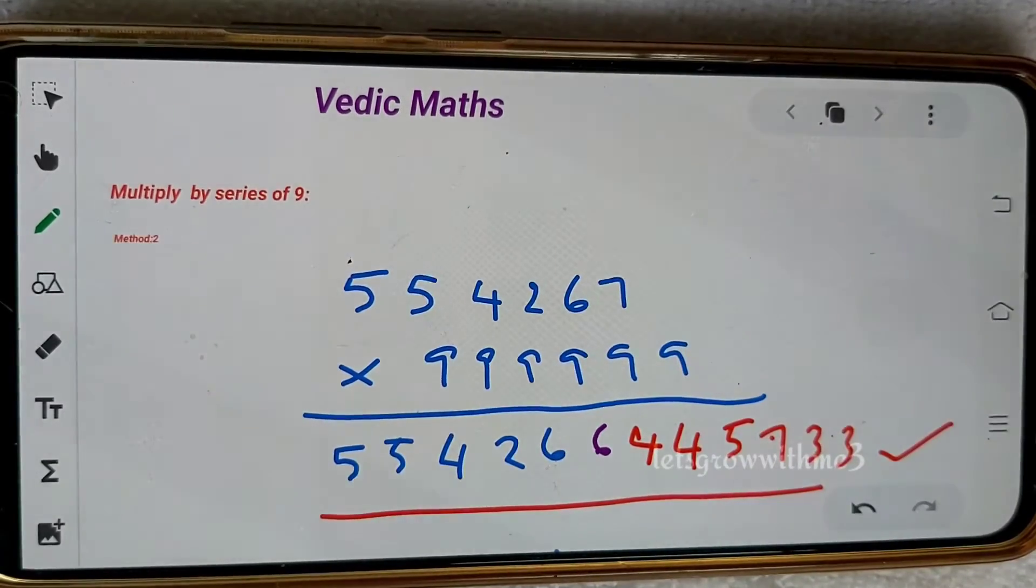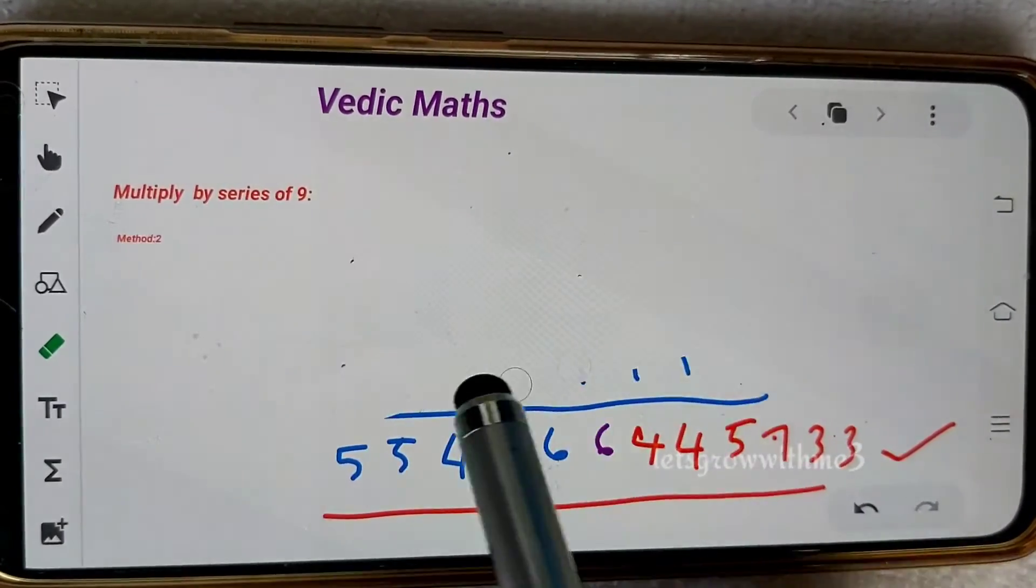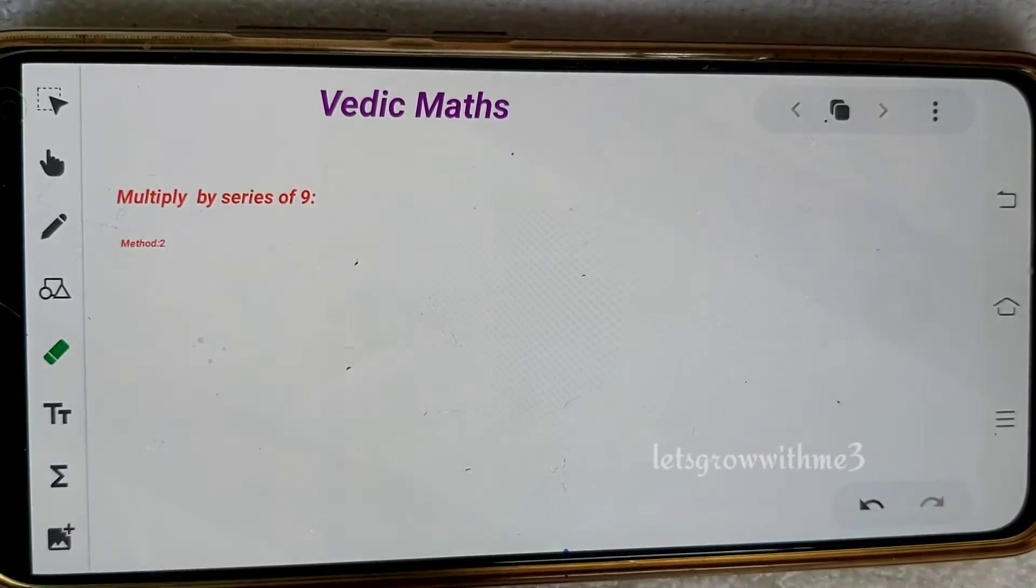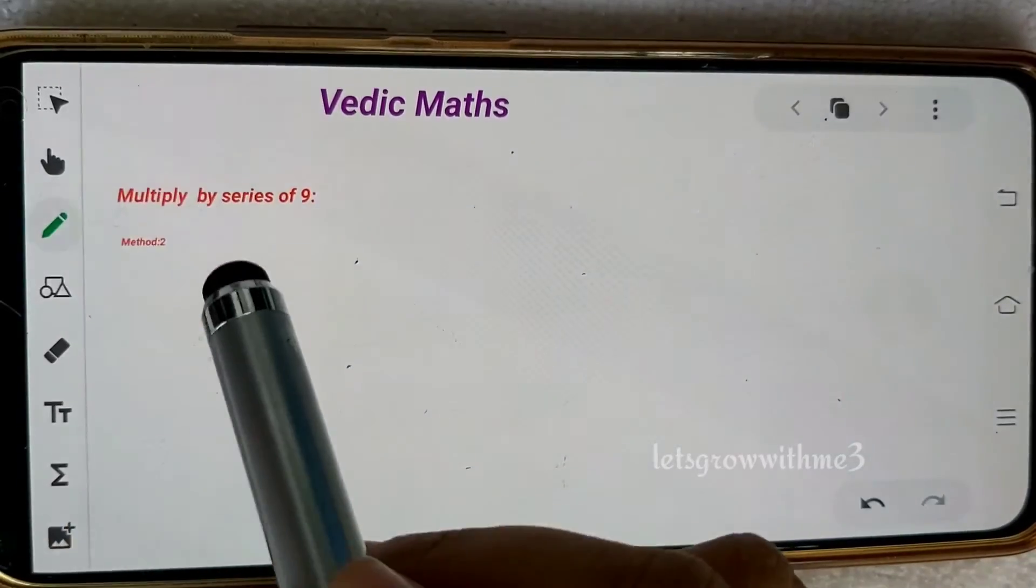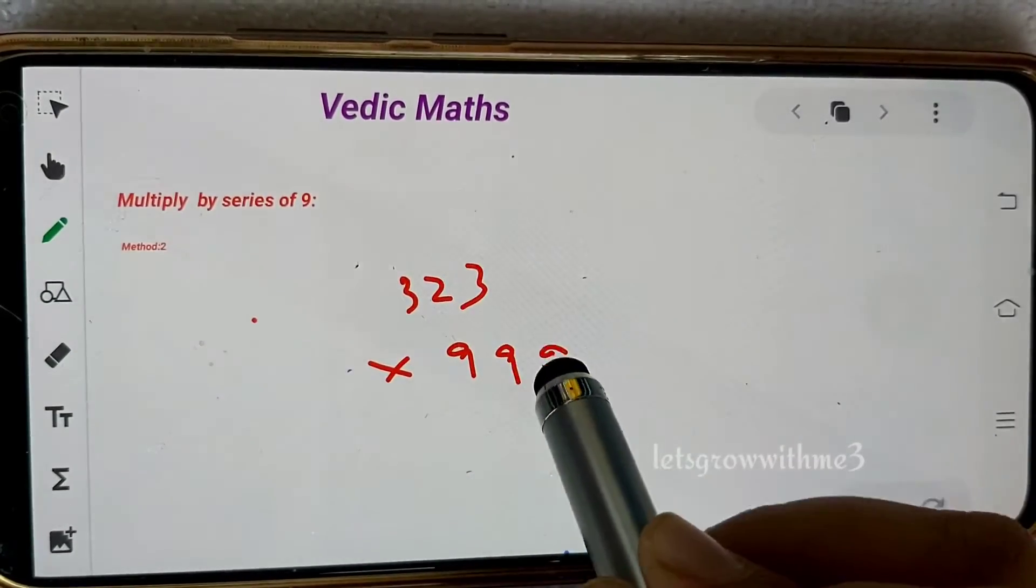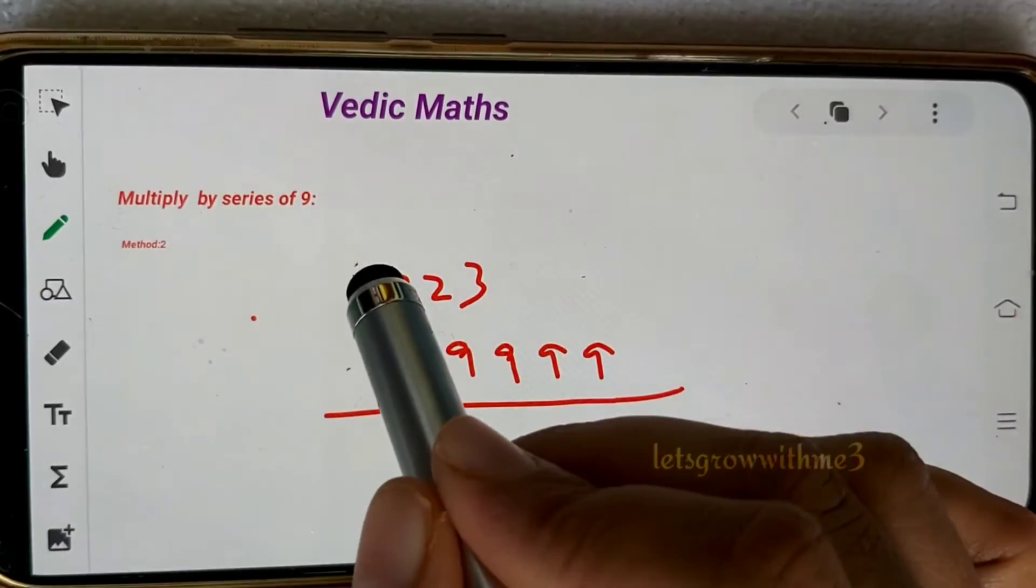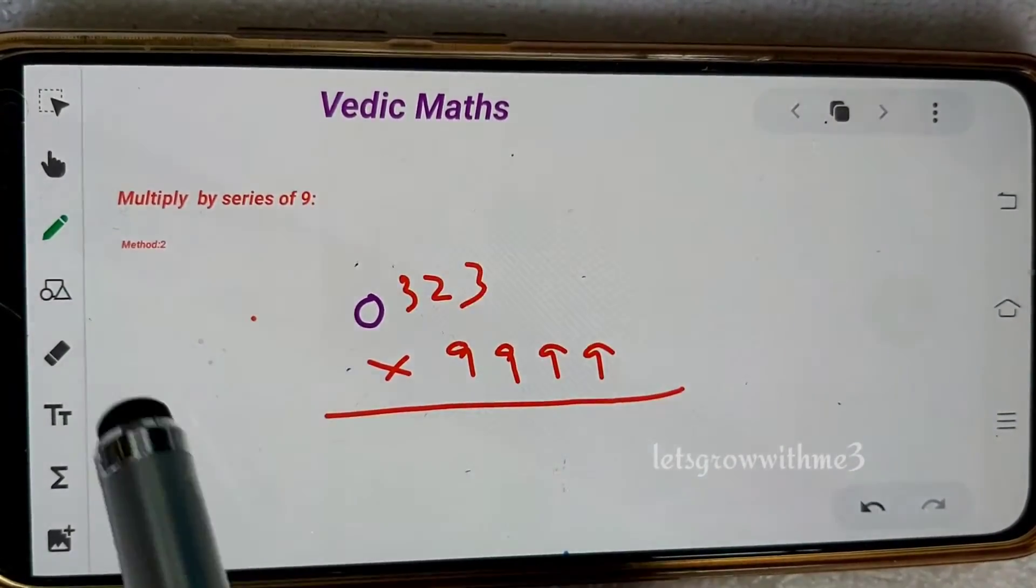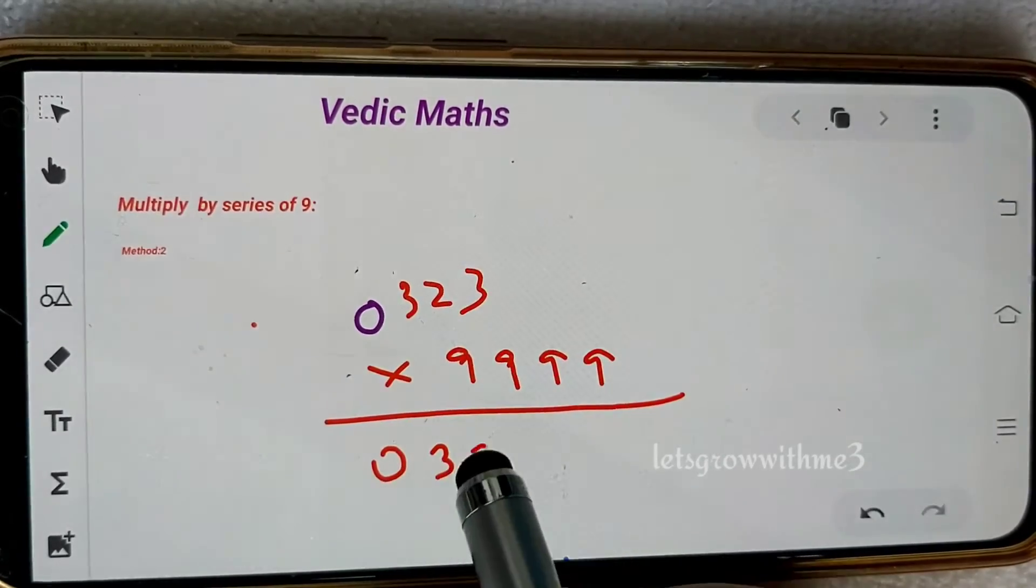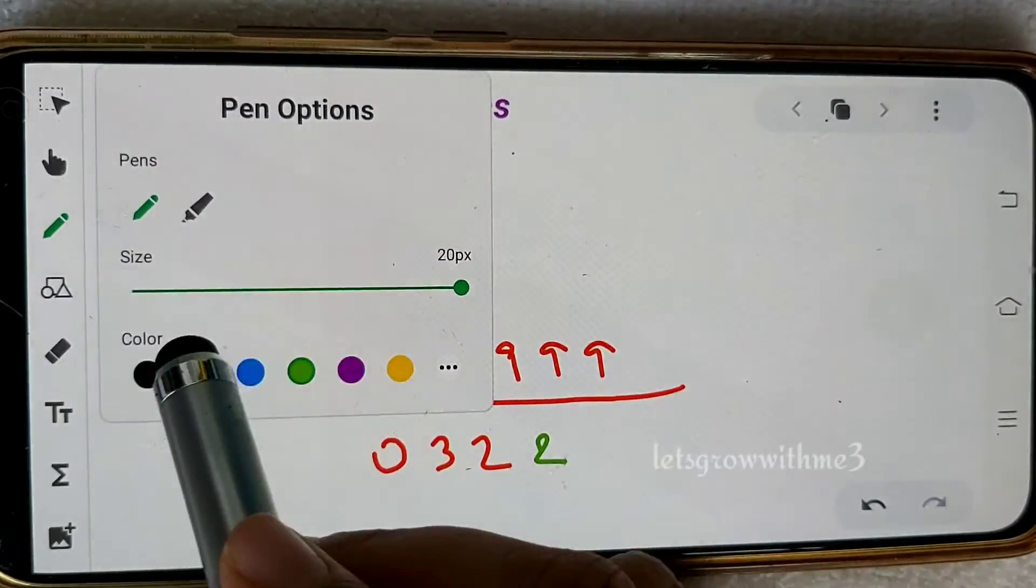Let's do our next question. Now I'm taking a different kind of problem. 323 times 99. If we have different digits, how to do? Can we apply this method? Yes, of course. Just we need to append the zero in front of the number. We can do this only if the multiplicand doesn't contain the equal number of digits. Just append zero to that, then remaining part is as it is.